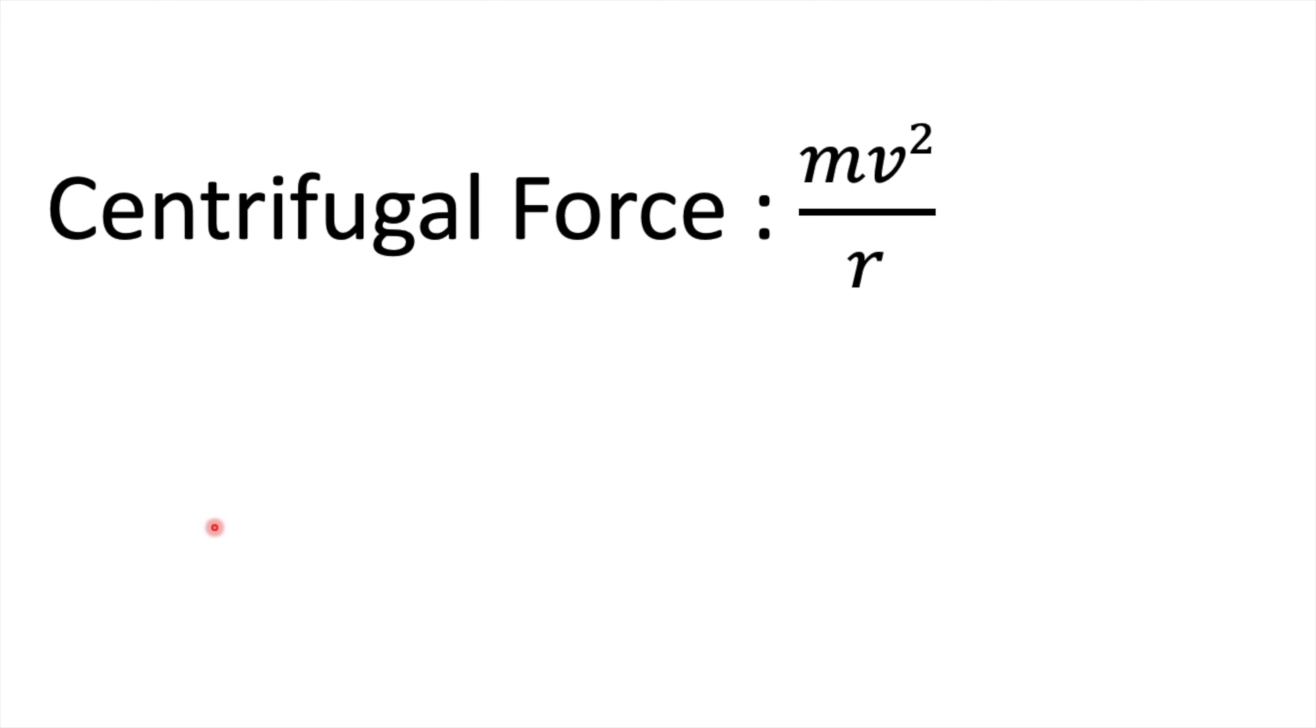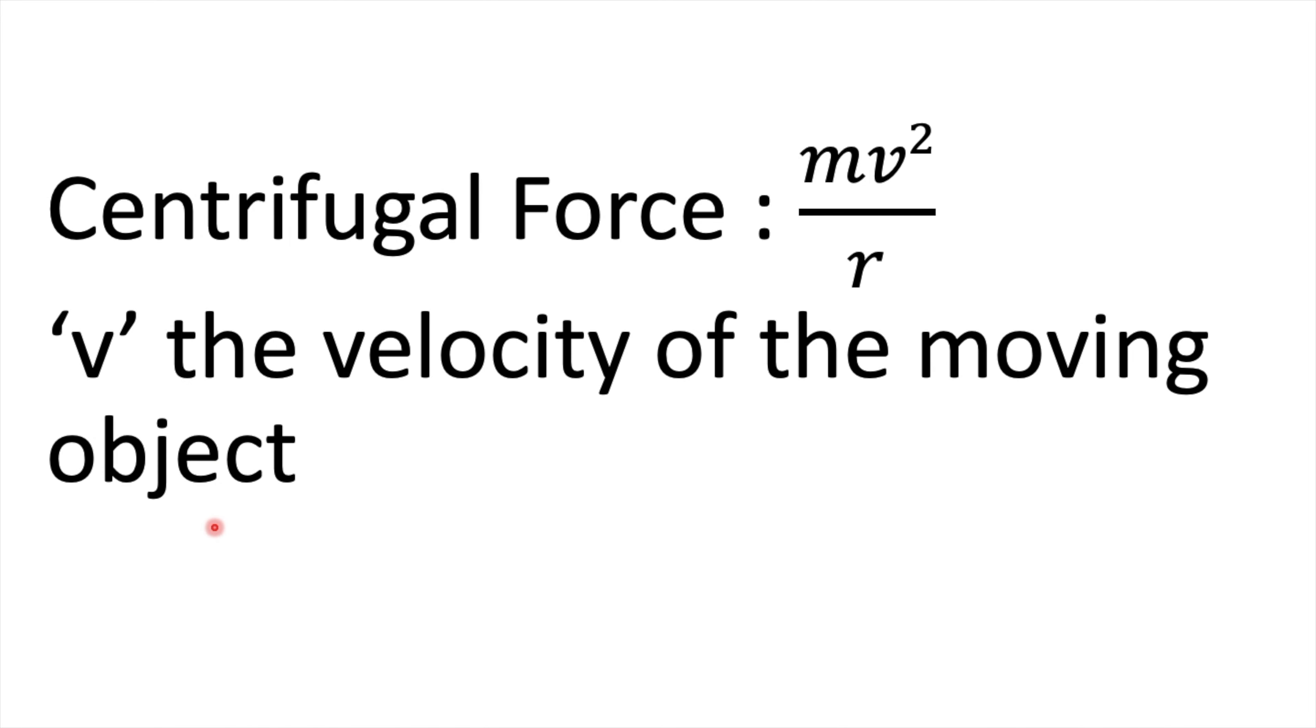The centrifugal force is given by the formula m v squared by r, where m is the mass of the object or moving body or satellite, r is the distance of the object from the center of the earth, and v is the velocity of the moving object.